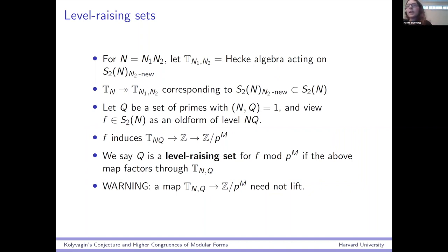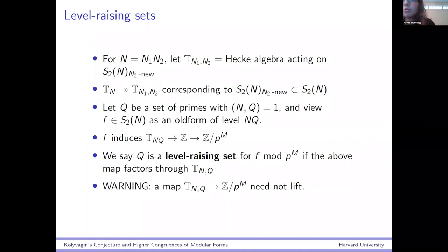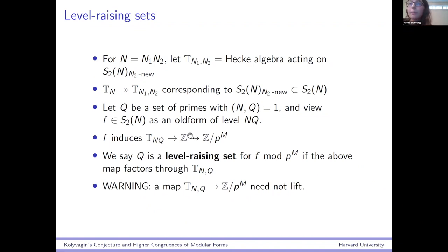What I mean by level raising is: if we take any set of primes Q where N and Q are coprime, we can just view our form F as an old form of level N times Q. There's a little bit of choice involved, but you can think of it as an old form, and then it's going to induce a map from the Hecke algebra of level NQ to Z/P^M Z — so just reducing F. We call Q a level raising set if this map factors through T(N,Q) — the Q-new quotient. If you just map to Z it's not going to factor through T(N,Q) because F is old, but if you reduce mod P^M, sometimes it does factor.